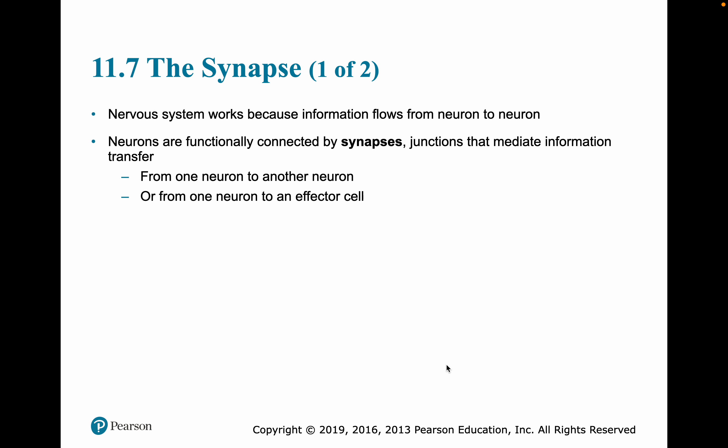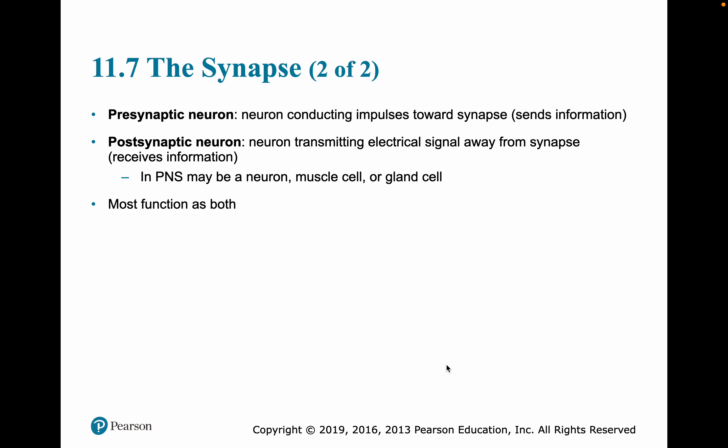The nervous system works because information is going to flow from neuron to neuron. Neurons are functionally connected by synapses. These are junctions that mediate information transfer. It goes from one neuron to another or from one neuron to an effector cell. The presynaptic neuron is a neuron that is conducting an impulse towards a second neuron, towards the synapse itself.